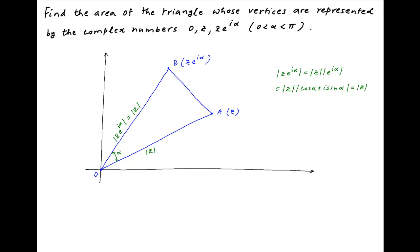Therefore, OB is also equal to the absolute value of Z. Therefore, in triangle OAB, the side OA is equal to the side OB. Therefore, if we drop a perpendicular from the point O onto the base AB of the triangle, and let the foot of the perpendicular be M, then the line OM will bisect angle AOB in this triangle. Also, the foot of the perpendicular M will bisect the side AB of the triangle.